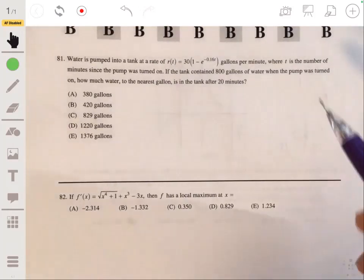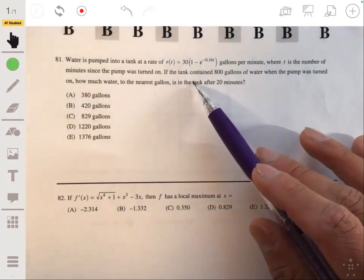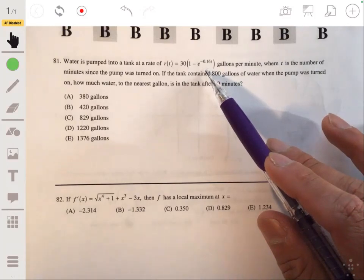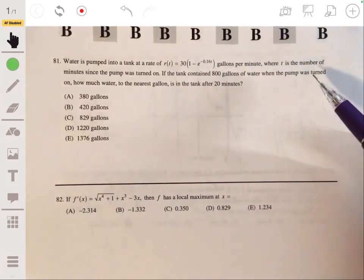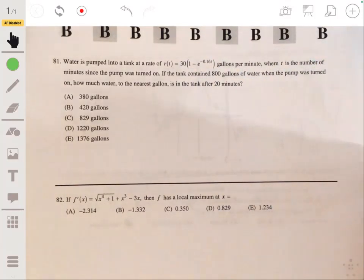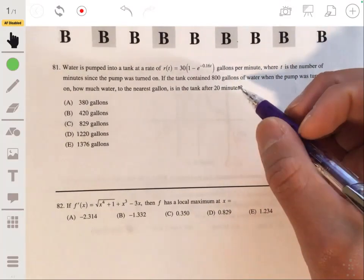All right, 81. We got water is pumped into a tank at a rate of 30 times one minus E to the negative 0.16 T gallons per minute, where T is the number of minutes since the pump was turned on. If the tank contained 800 gallons of water when the pump was turned on, how much water to the nearest gallon is in the tank after 20 minutes?